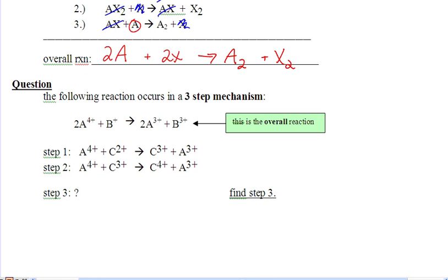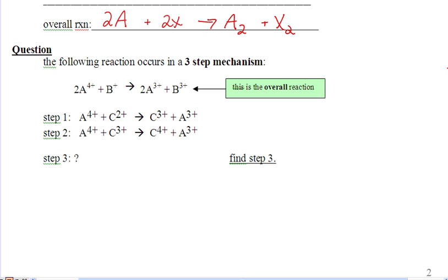Why don't you guys give this one a shot? It's a little trickier. This is the little twist. In this example, I am giving you step one, step two, and the overall. You need to find step three. So what I recommend is you writing the overall reaction down there.